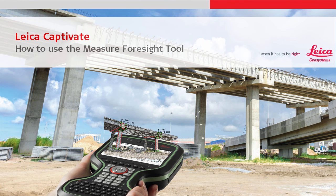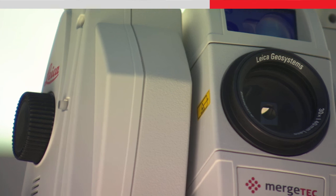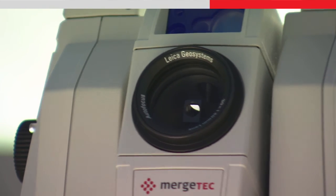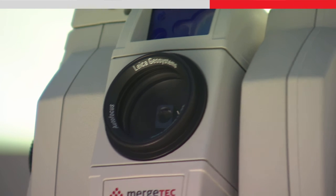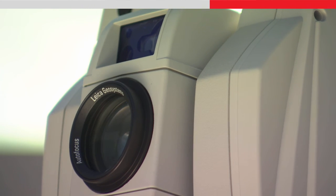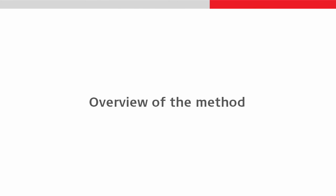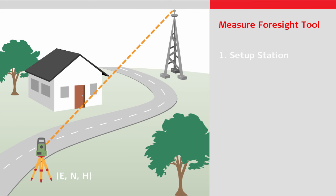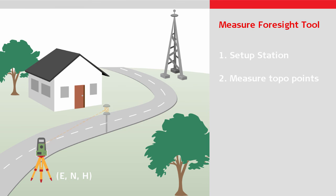This video will explain how to use the Measure Foresight tool within the Measure app of Leica Captivate. This useful tool allows one or more foresights to be easily and quickly established, which can then be used for the next total station setup. Let's assume the total station has already been set up using the Set Orientation method, and we have accessed the Measure app and have measured some topo points.